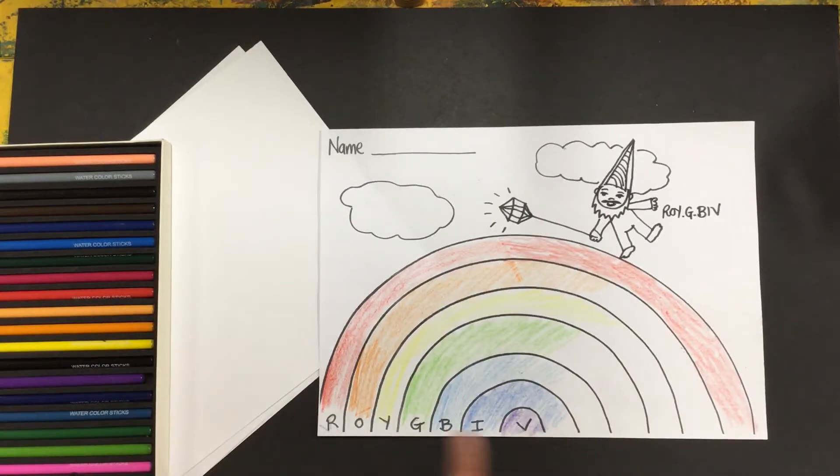So we've got Roy G. Biv. R is for red, O is for orange, Y is for yellow, and G is for green, B is for blue, I for indigo and V is for violet.